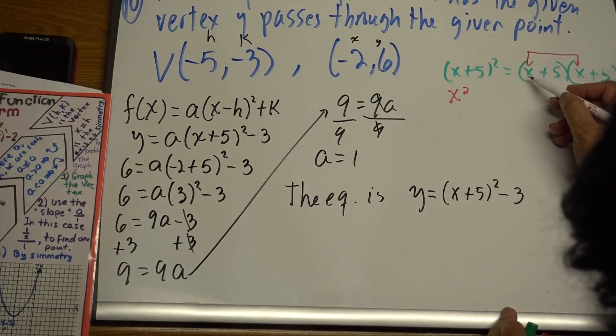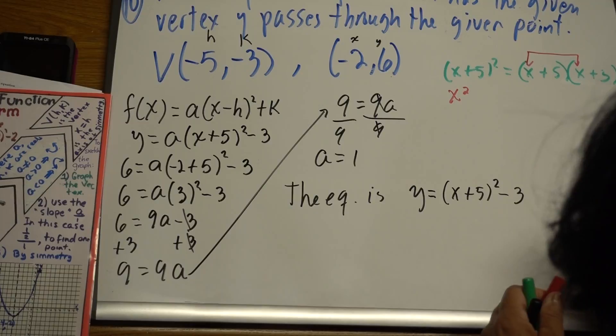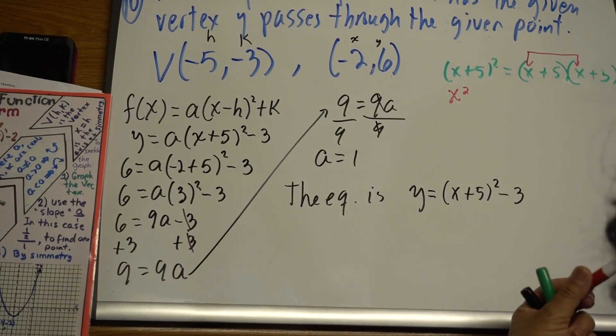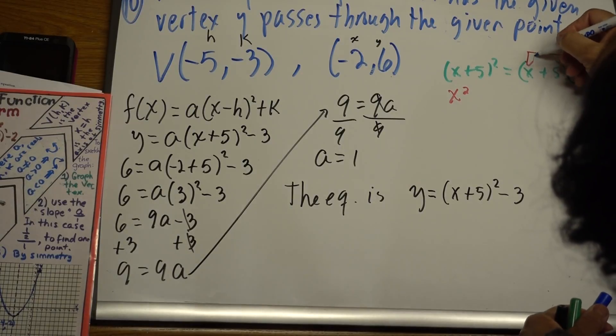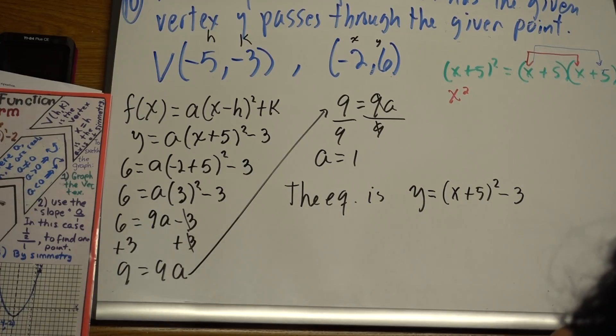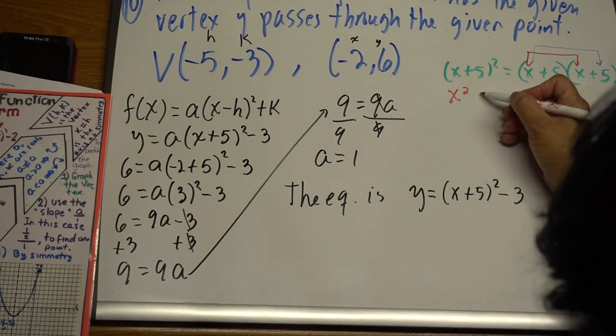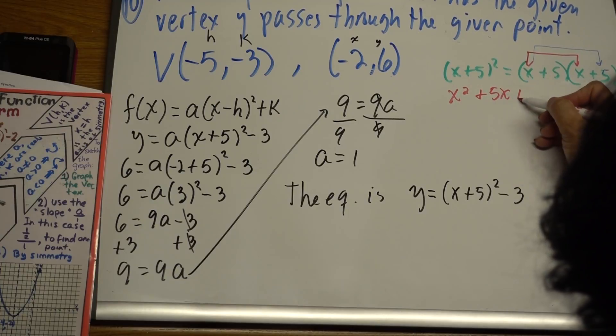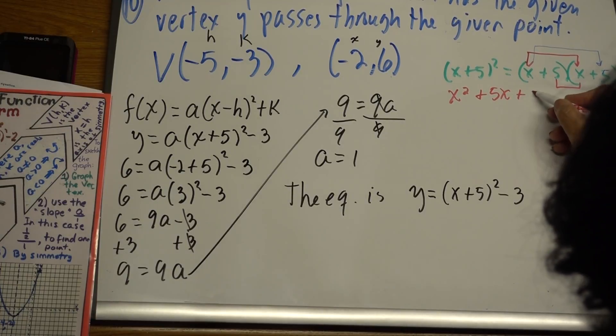Then we have the outers. So that's going to be these ones, this one and that one. This is 5. So we have 5x. Then the inners, 5x.